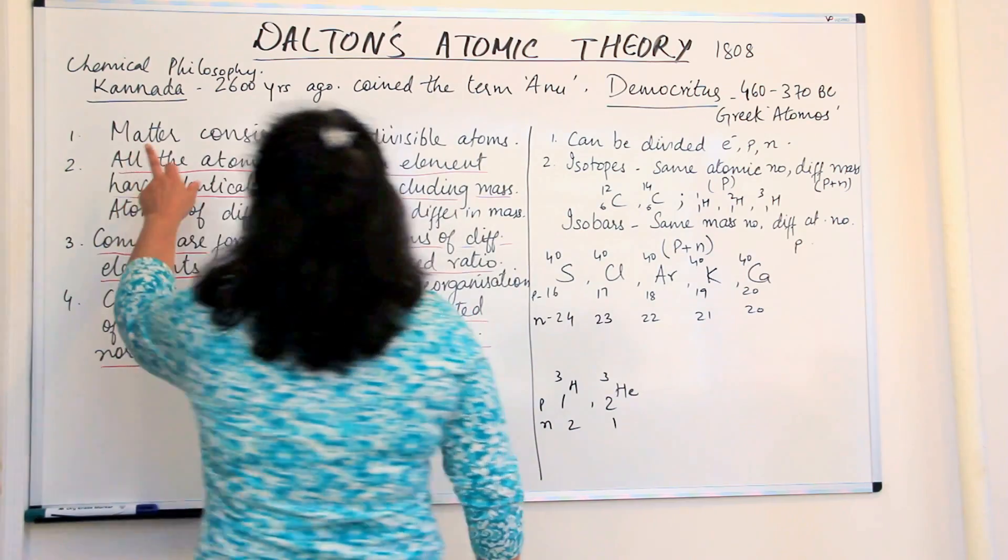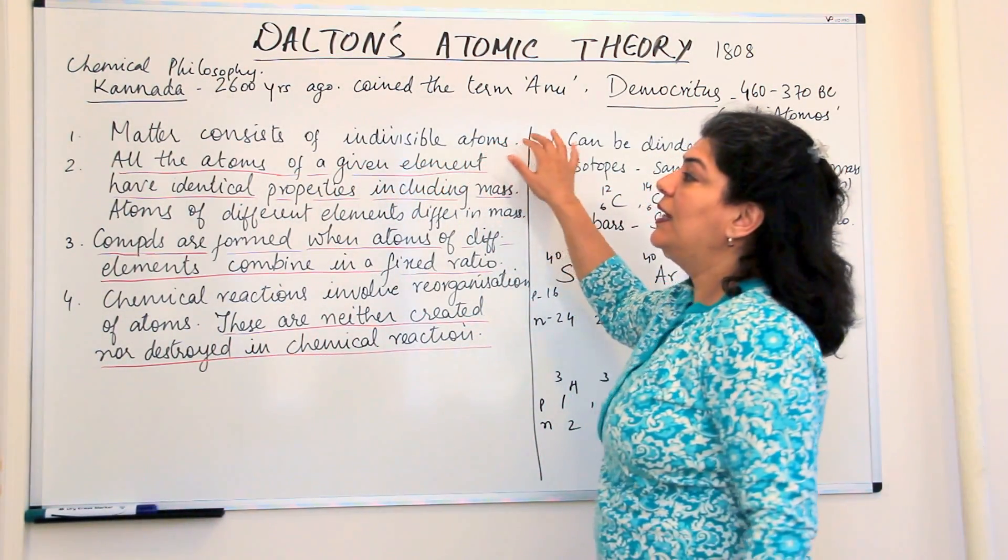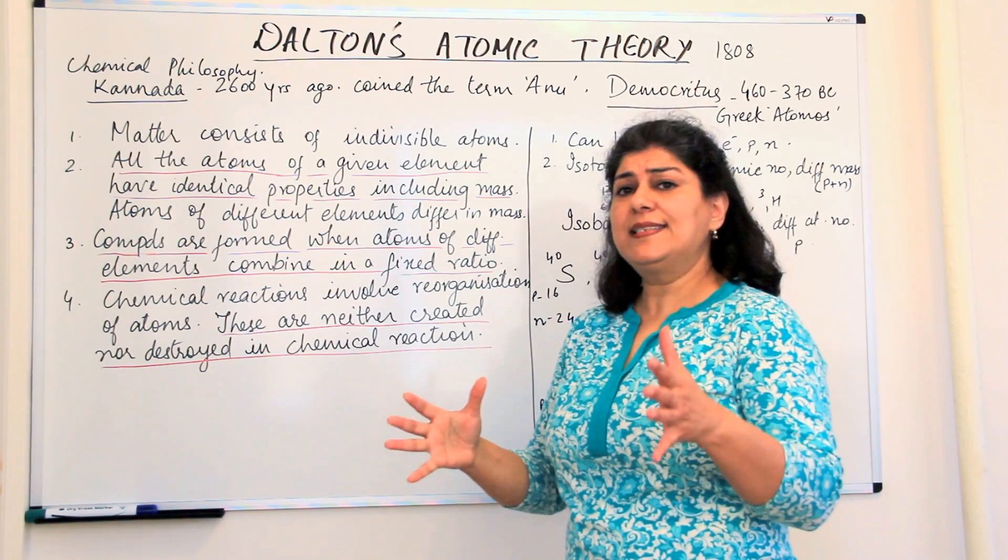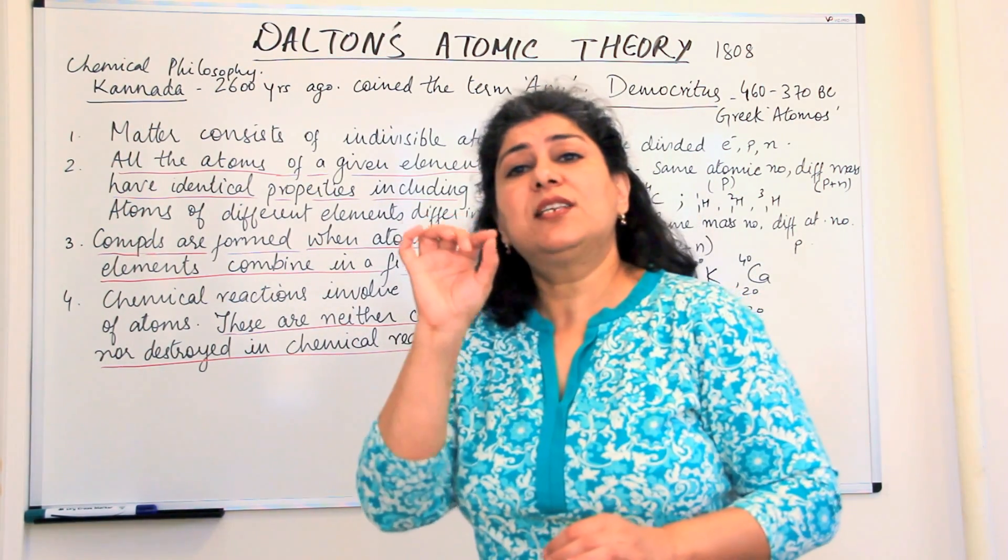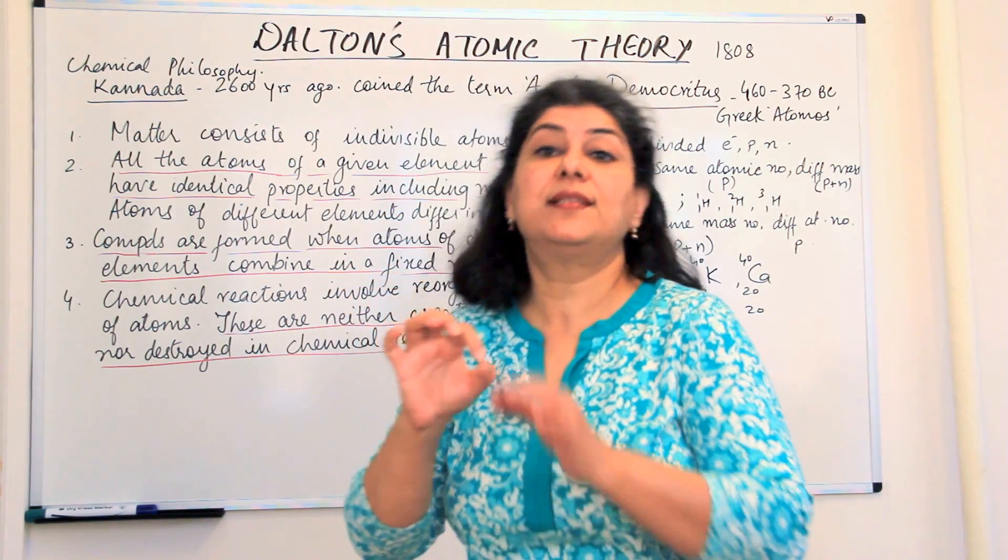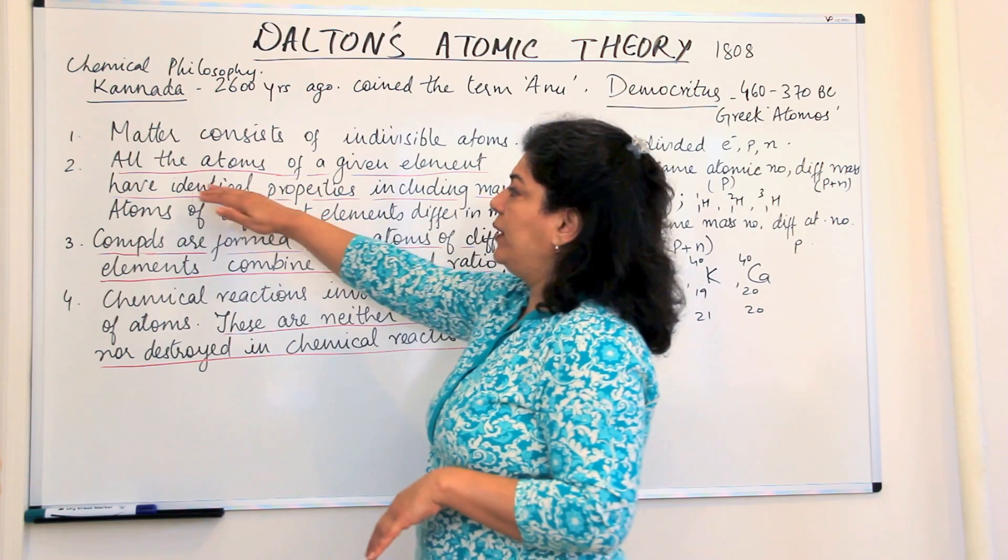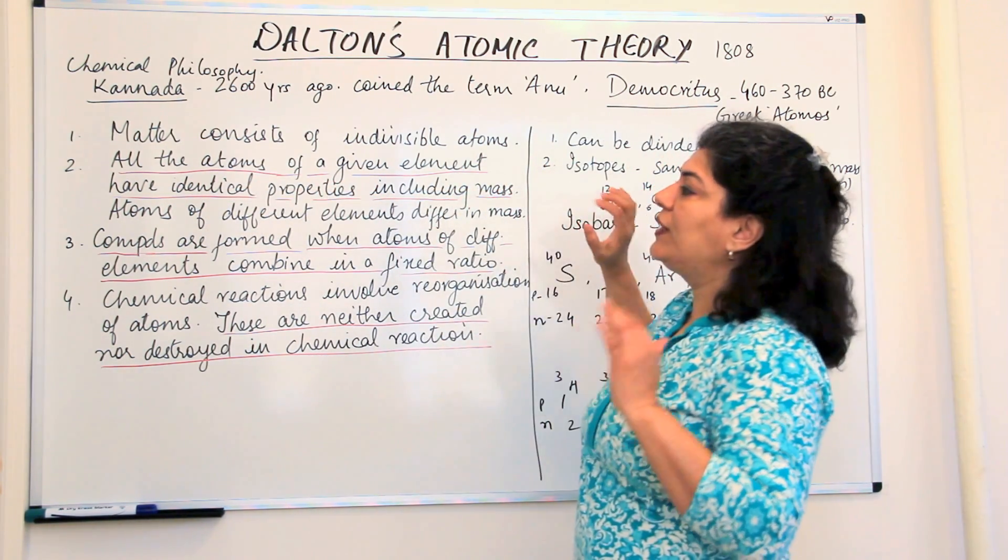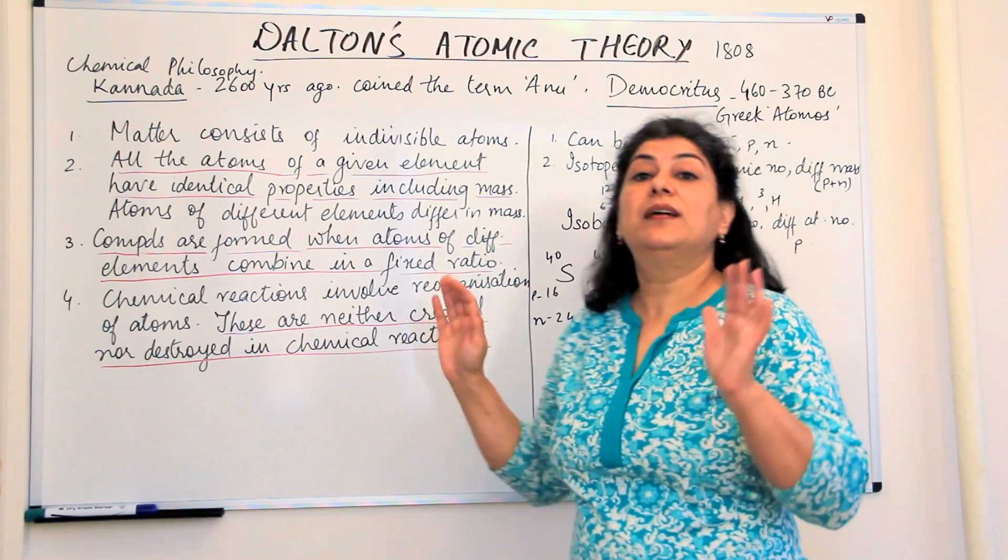What was Dalton's atomic theory? These are the statements. The first statement is that matter consists of indivisible atoms. He said that matter, as I showed you in the example of cutting the paper, it consists of very, very small particles and they're so small that they are indivisible.